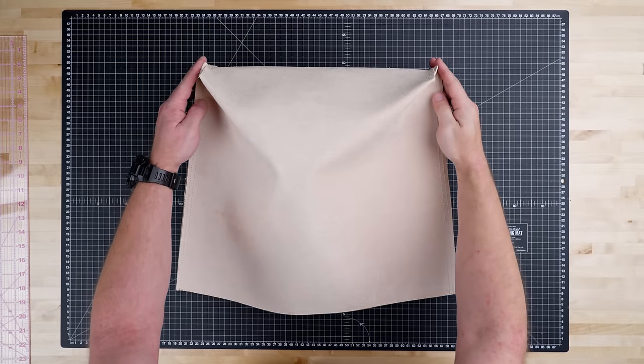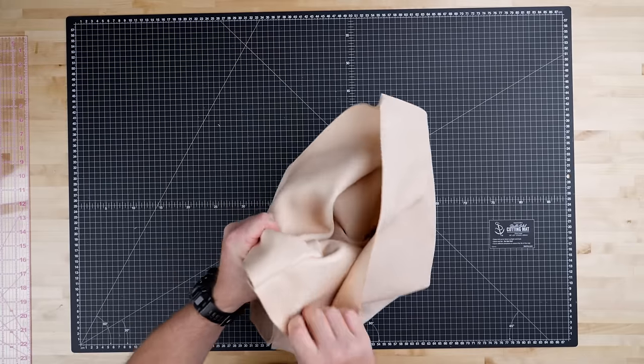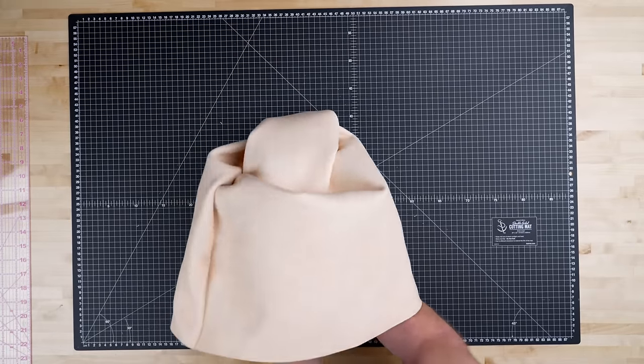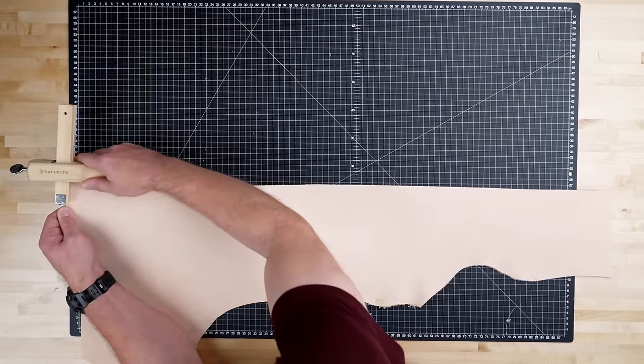Now everything is sewn together, so we're gonna flip our bag right side out. This can take a while, so have some patience when doing so. Now that our bag is flipped right side out, we need to make our straps.